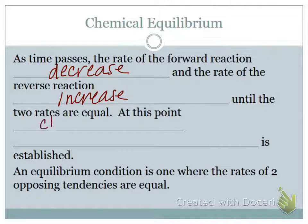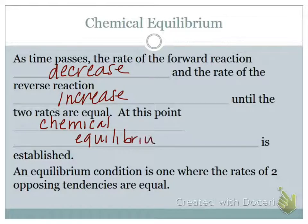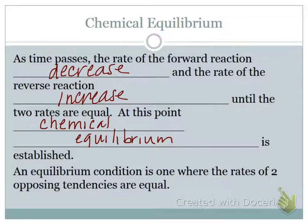That's what we call chemical equilibrium. An equilibrium condition is one in which the rates of the two opposing tendencies are happening at the same rate — not necessarily producing the same concentrations, but happening at the same rate.